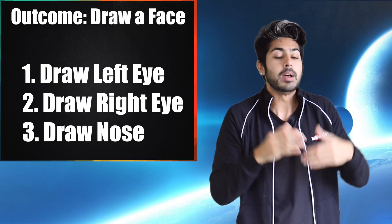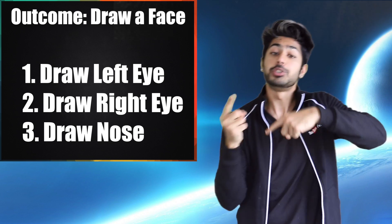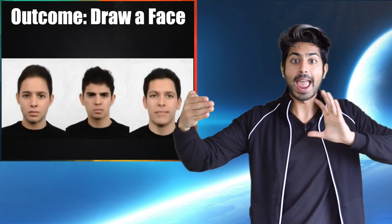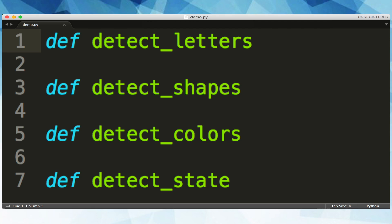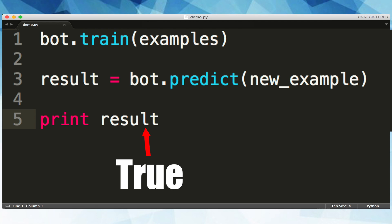Traditionally, programming has been about defining every single step for a program to reach an outcome, but machine learning flips that approach. With machine learning, we define the outcome and the program learns the steps to get there. For example, if I wanted to build an app that can recognize California license plates, instead of writing code to recognize hundreds of different features like the shape of certain letters and the colors, we just say: here are some examples of a California license plate — learn the steps you need so that you can recognize it.